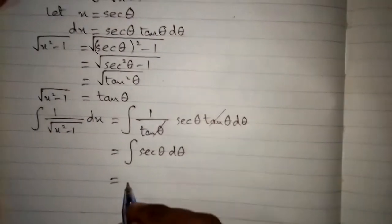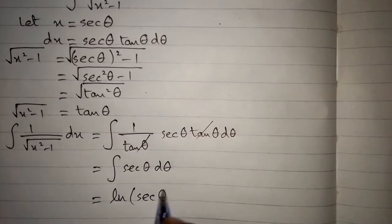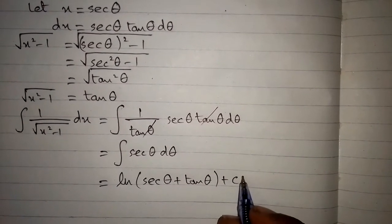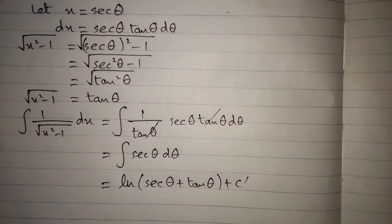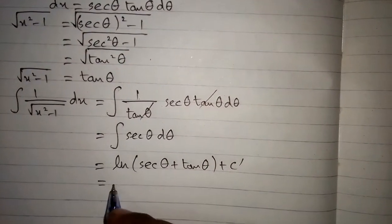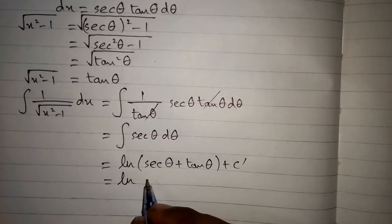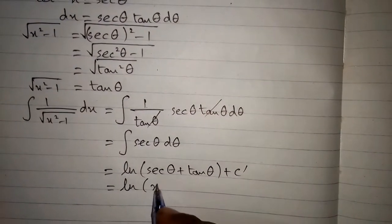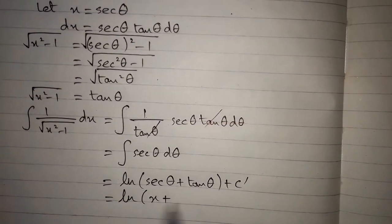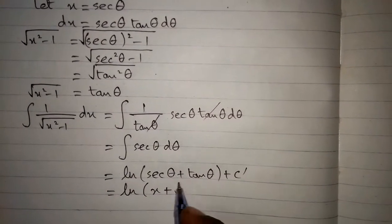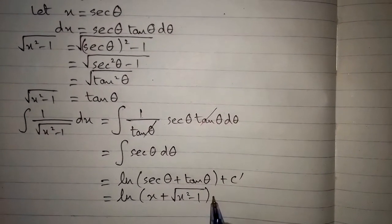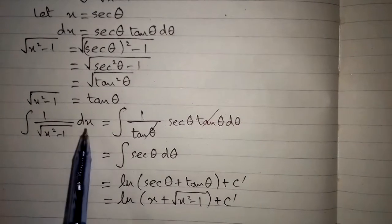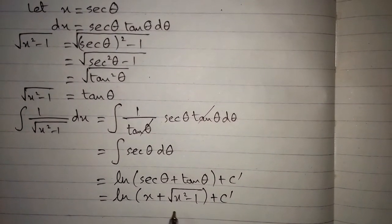The integral of sec theta is ln of sec theta plus tan theta plus c dash. Now we back-substitute: sec theta equals x, and tan theta equals square root of x squared minus 1. So the integral of 1 upon square root of x squared minus 1 dx equals ln of x plus square root of x squared minus 1 plus c dash.